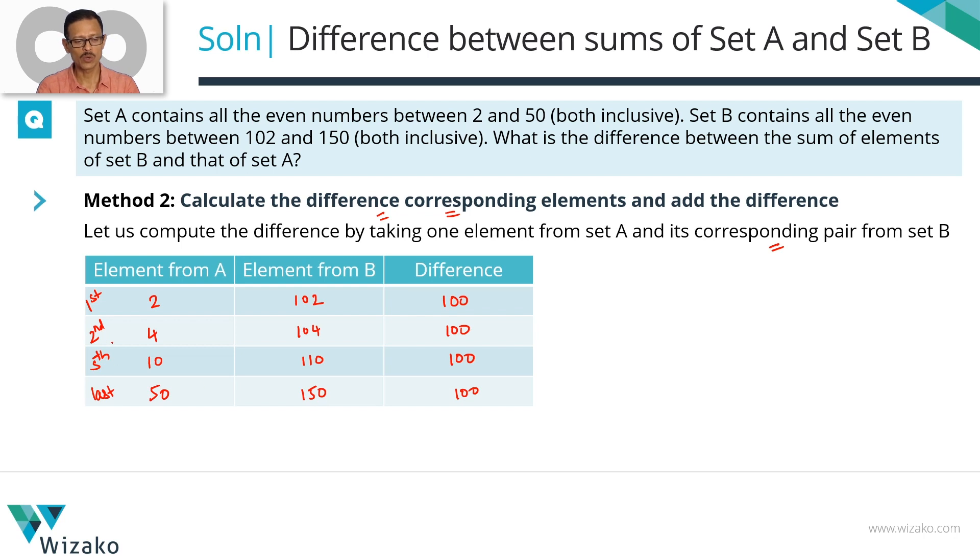In method 1, what did we do? We basically added the first element, second element, added all of this up to the 50th element, found the sum for this. This worked out to 650. And then correspondingly found out the sum for set B, which worked out to 3150, and found out the difference.